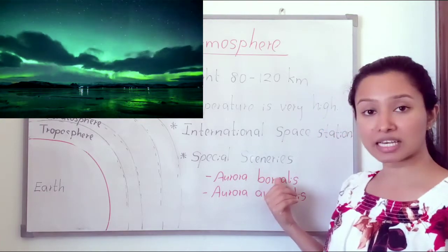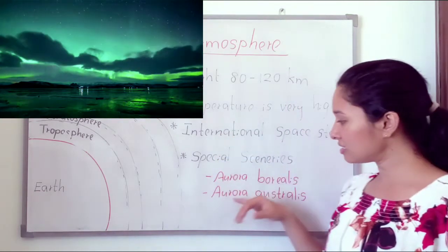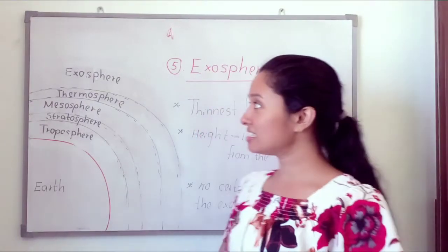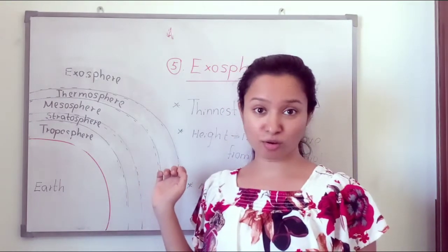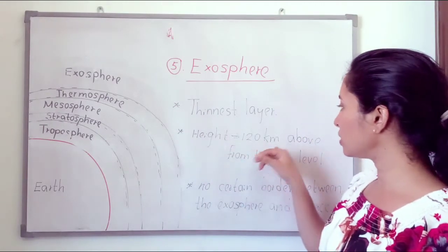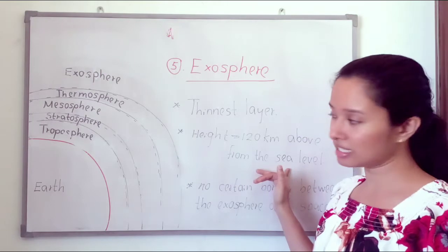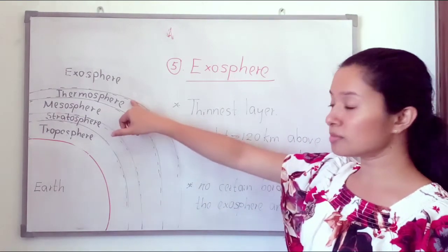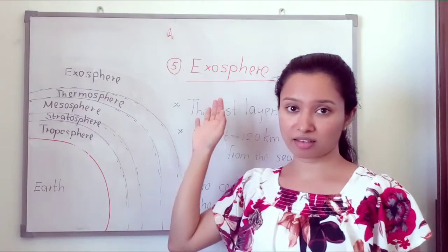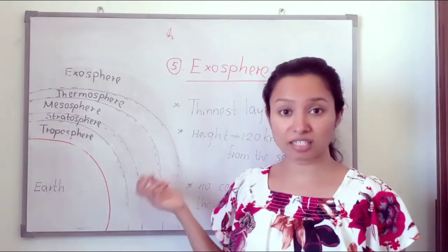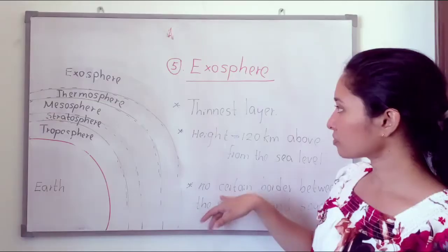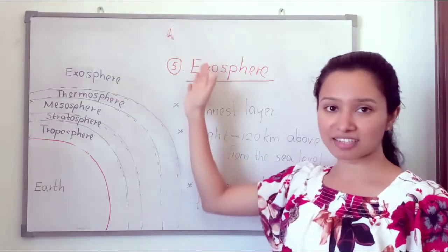Aurora borealis can be seen at the northern pole, and aurora australis can be seen at the southern pole. The fifth and last layer is the exosphere. This is the thinnest layer, with a height of 120 kilometers and above from the sea level. We cannot find a certain border between the exosphere and space.